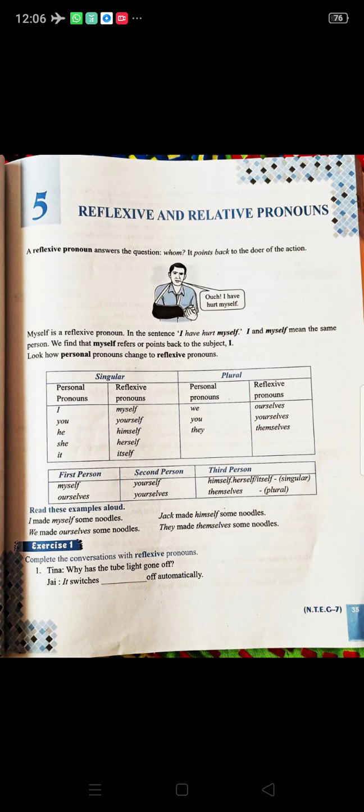Let's talk about reflexive pronouns first. Reflexive pronouns always answer the question whom. Whenever you question the sentence with whom, you will get in the answer as a reflexive pronoun. Do remember that it points back to the doer of the action. Here in the sentence it is written like, I have hurt myself. Here I and myself are both the words which refer or point back to the subject or to the same person. So reflexive pronouns point back to the doer of the action.